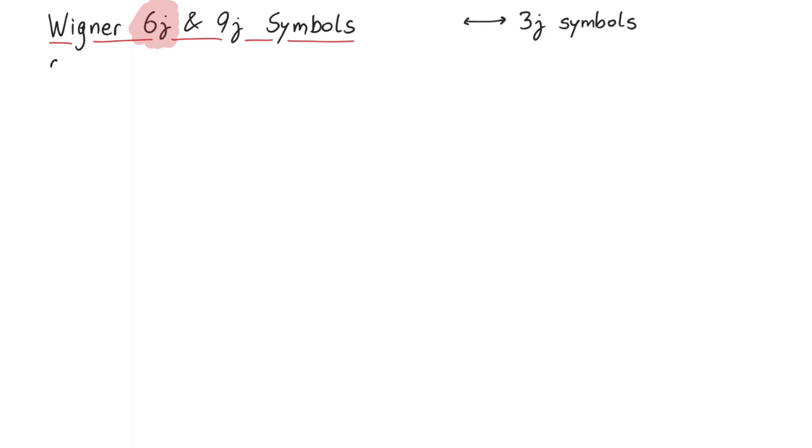So first, let's talk about the 6j symbols. As the name suggests, these contain 6 angular momenta, written in between two curly brackets. But don't let this confuse you, similar to the 3j symbols, this is not a matrix, but rather just a placeholder for a real number.